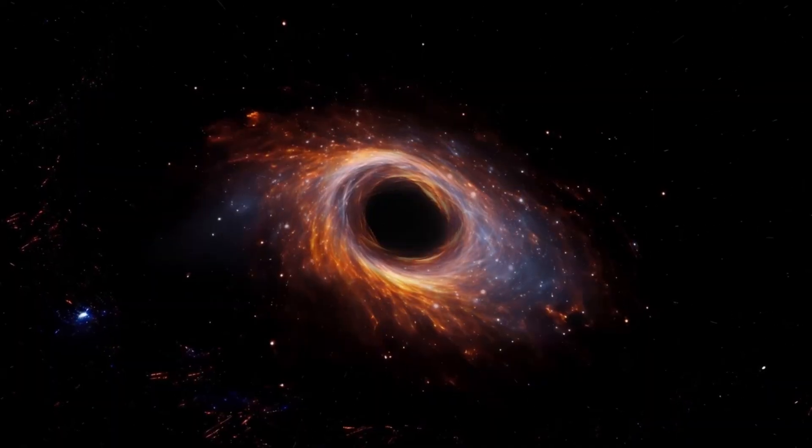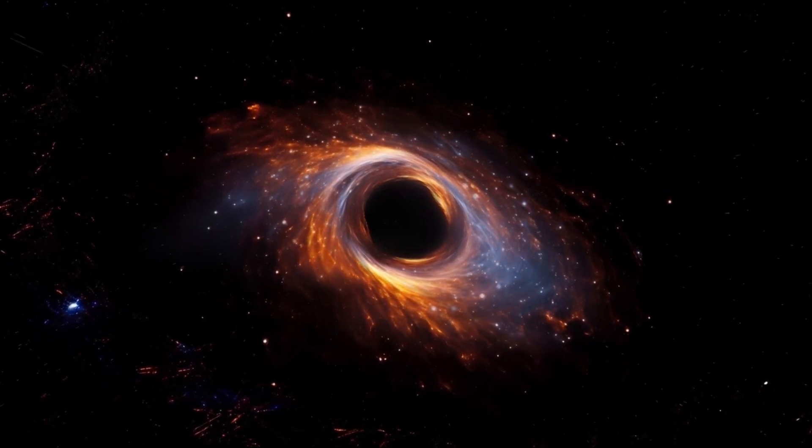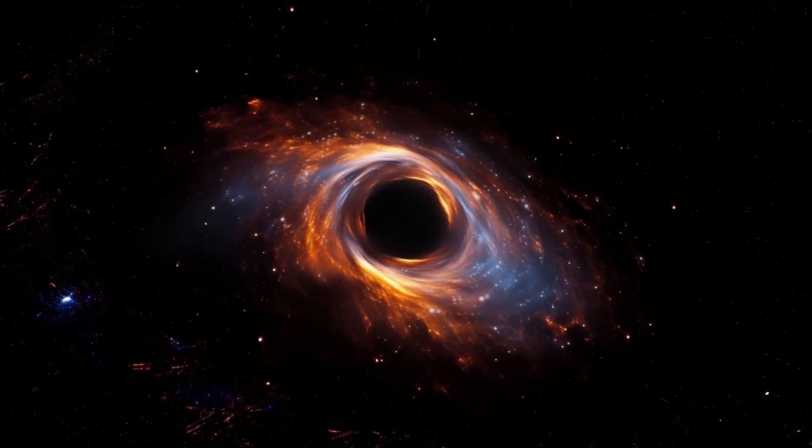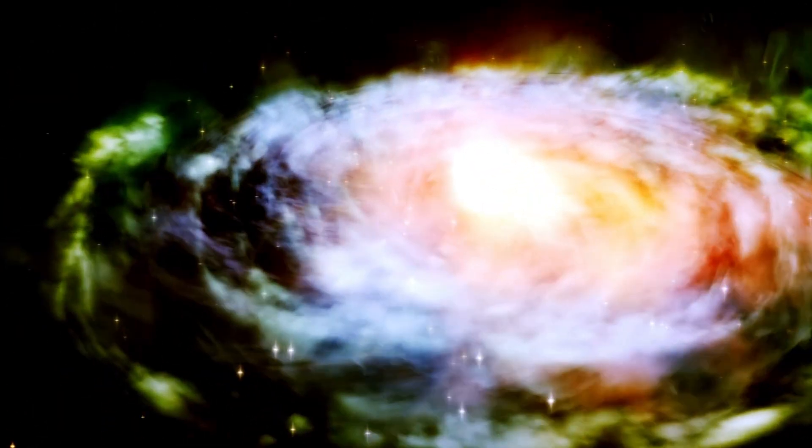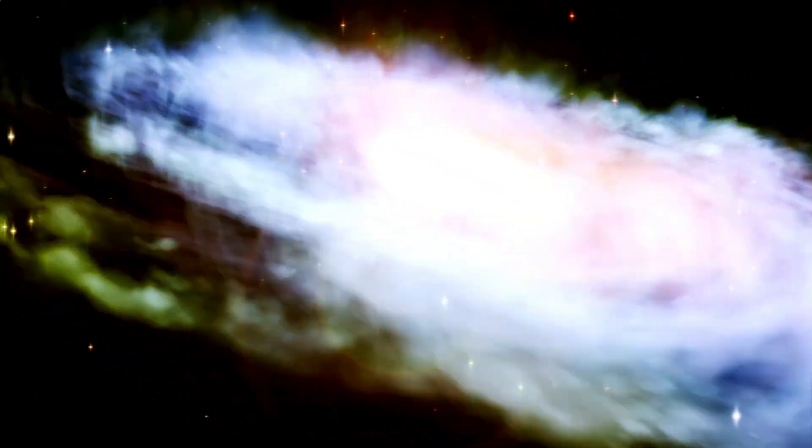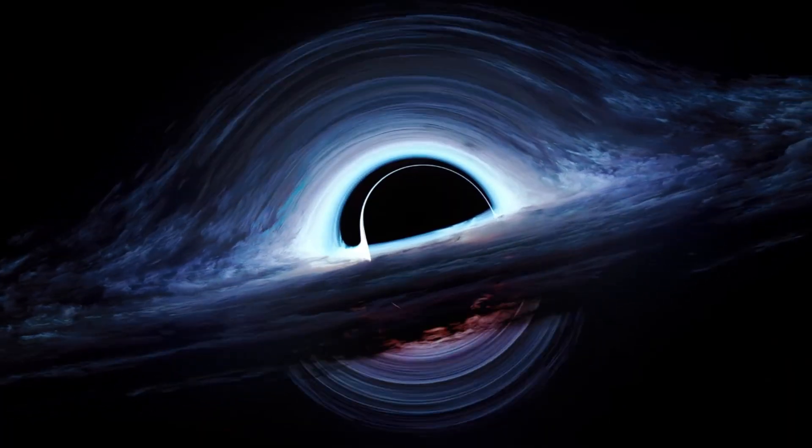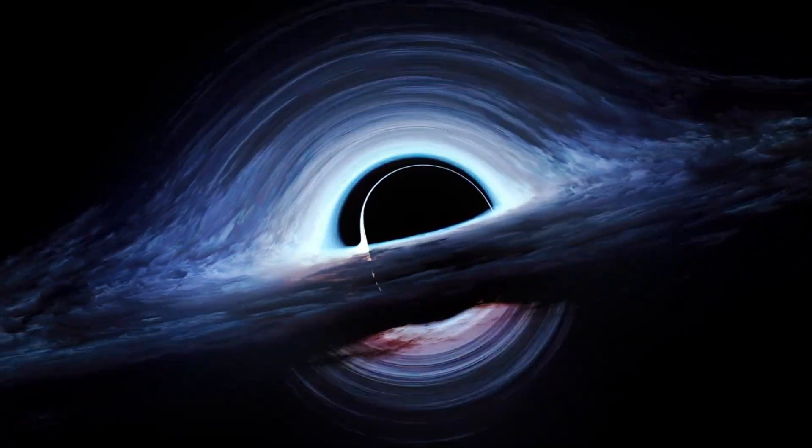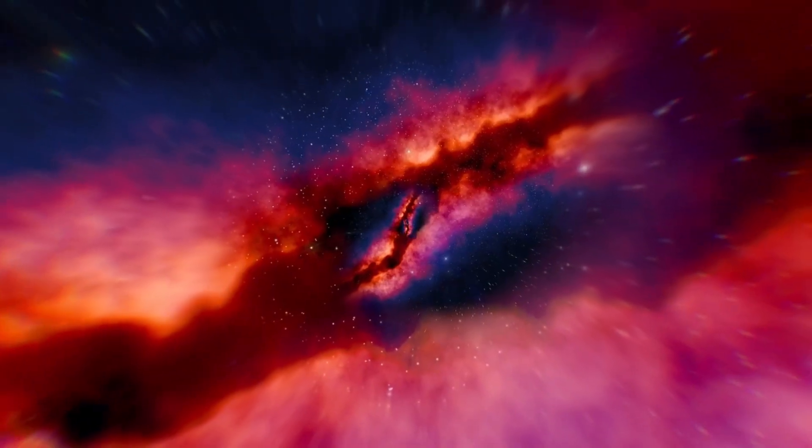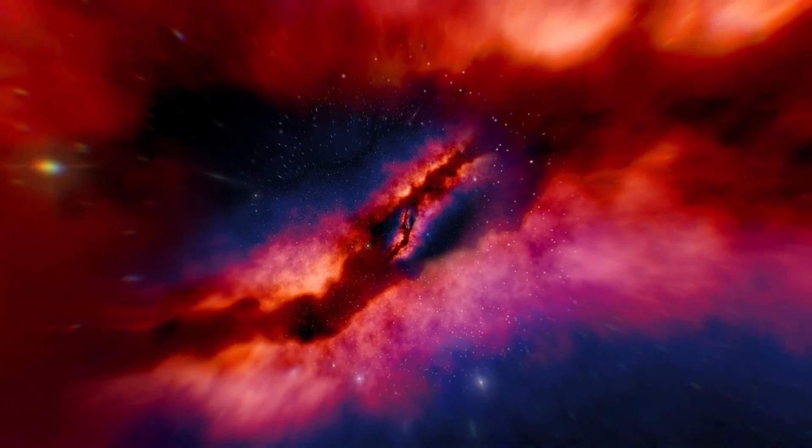This raises a huge question. How do supermassive black holes get so big, so fast? One idea is that they form from the direct collapse of massive gas clouds in the early universe. These clouds could skip the star phase entirely and collapse straight into black holes, thousands or even millions of times the sun's mass. Another theory is that black holes in the early universe merged like crazy. Imagine a chaotic cosmic mosh pit where black holes keep smashing into each other, combining their masses in record time. There's also a chance that these early galaxies were just swimming in gas, giving black holes an endless buffet to gorge on. Whatever the case, our models of black hole growth are getting a serious reality check.